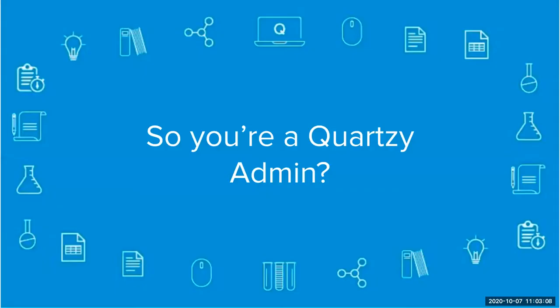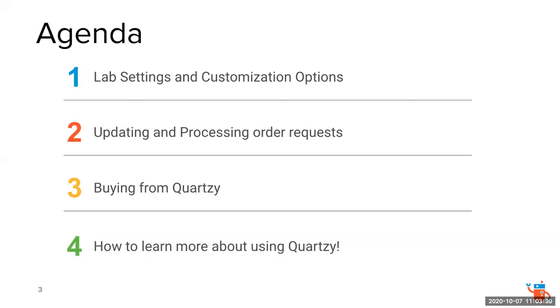So without further ado, we'll be talking today about many of the features available to you in Quartsy as an admin. A quick outline: the webinar should last about 30 minutes and we'll have plenty of time for questions. I'll pause at different times during the webinar — as Jeff said, you can type those into the chat area of the Zoom meeting, and I'll go ahead and pause at those times so we can answer some questions. What we'll be talking about today is navigating your account and the certain lab customization options, updating and processing order requests, buying from Quartsy — so that means understanding your payment options and using the shop feature — and finally, using the Help Center to continue to get assistance from the support team.